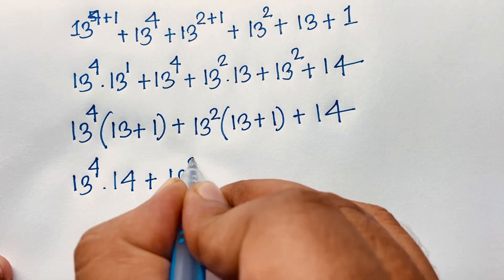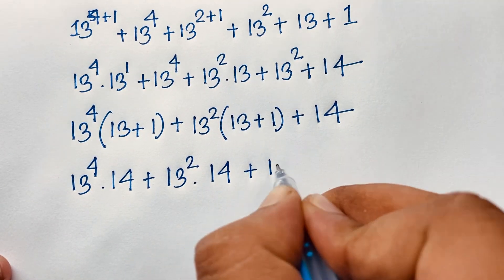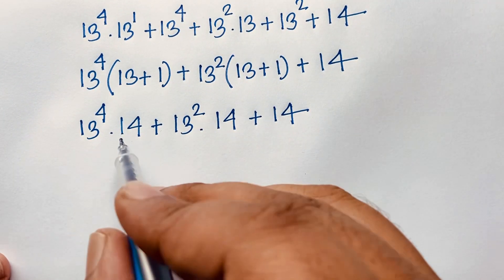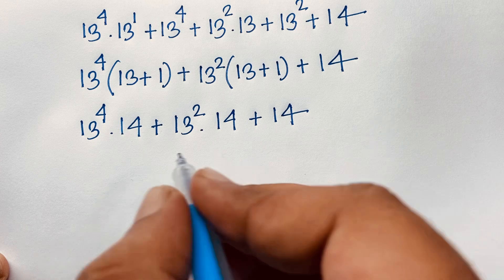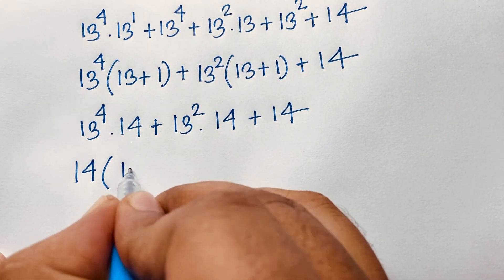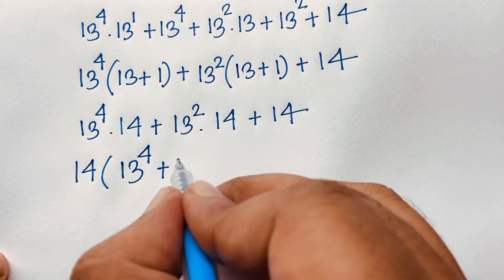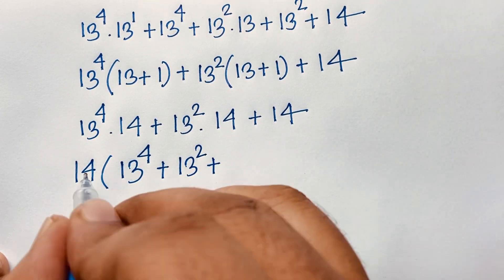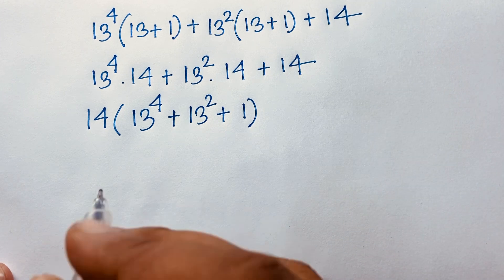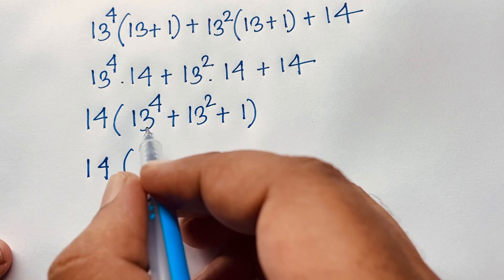Plus 13 power 2 times 14, plus 14. Now you can see that 14 is common — this is 14, this is 14, this is 14. So I take 14 as common: these divide to give 13 power 4, this divides to give 13 power 2, and this divides to give 1. So we have 14 times (13 power 4 plus 13 power 2 plus 1).